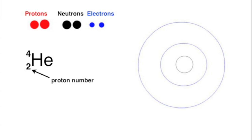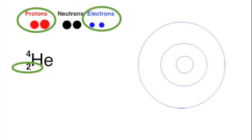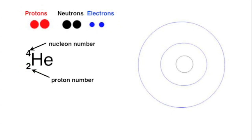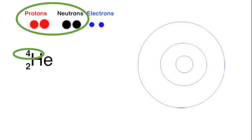On the symbol, the number two represents the proton number, the number of protons in the nucleus. It's sometimes called the atomic number. In an atom such as this, which is electrically neutral, the number of electrons will be the same as the number of protons. The number above the symbol is the nucleon number. It is the total of the number of protons plus the number of neutrons.